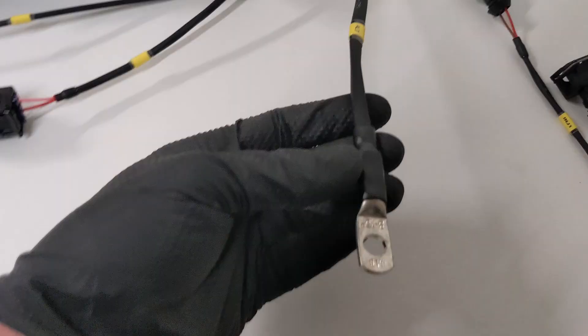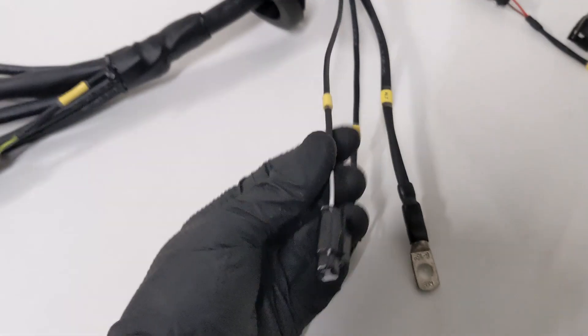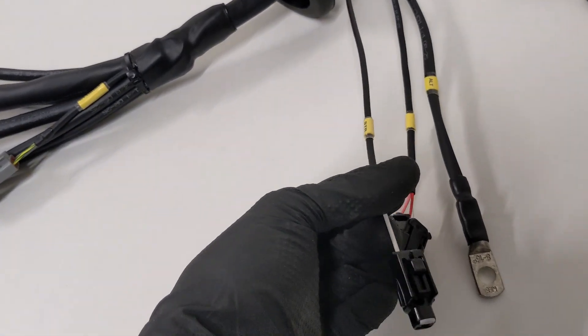When we come into the engine bay, we've got new alternator power wiring, the alternator three-pin plug, and the starter solenoid as well. The starter solenoid is controlled off the PDM, so that comes from one of the high current outputs.